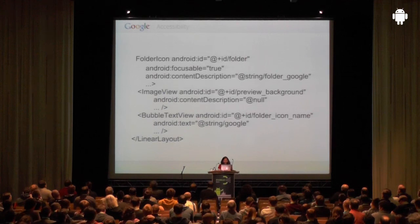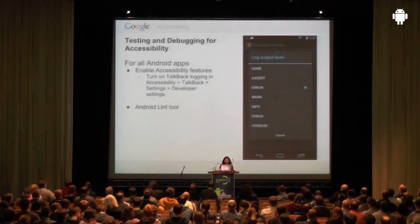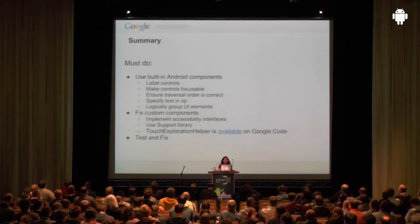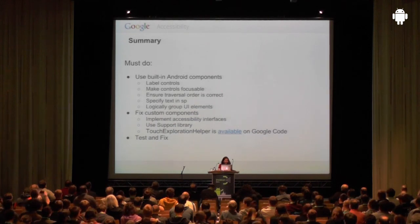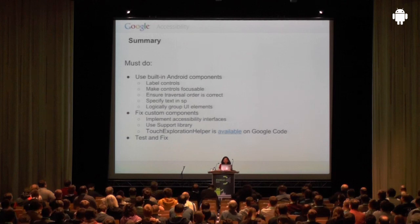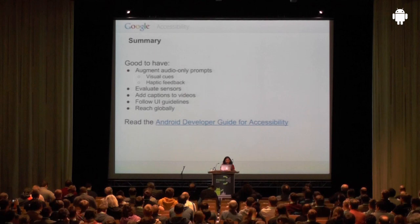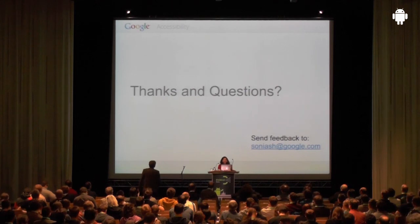I'm running out of time, but to summarize — if you are using Android components, there are only five things you need to do: label your controls, make them focusable, ensure the traversal order is correct, specify text size in SP, and logically group elements. We saw examples of all of these. For custom components I'm available outside, so please feel free to come and talk to me. Thank you very much, and please let me know if you have any questions.